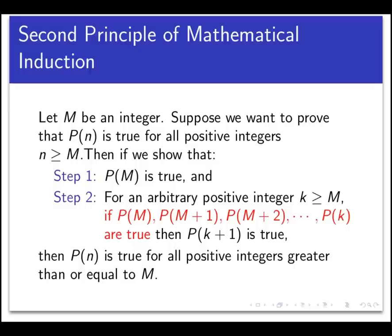So this is called the second principle of mathematical induction, and it goes like this. Suppose m is an integer, and we're trying to prove that a predicate P of n is true for all n greater than or equal to m. This is the same setup as the extended principle of mathematical induction. Then the second principle says that we first prove P of m is true as a base case.